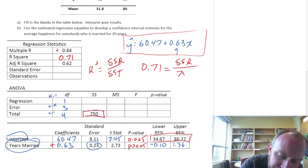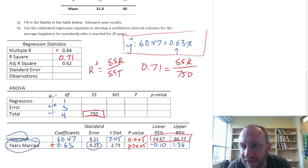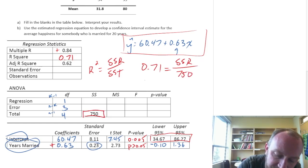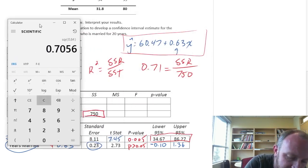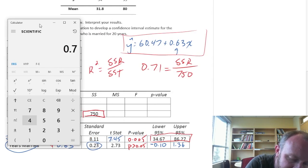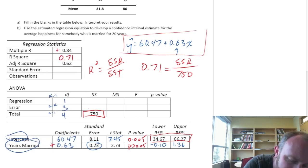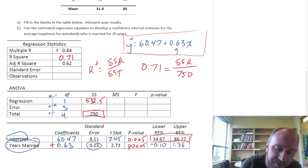Well, we have SST, it is 750. So if we solve for SSR, SSR is just going to be 0.71 times 750. So 532.5.